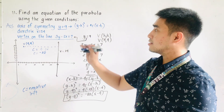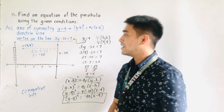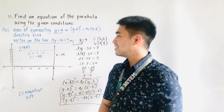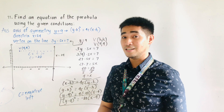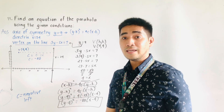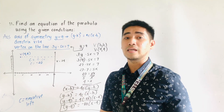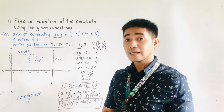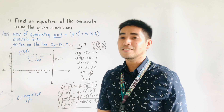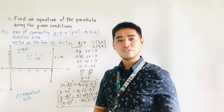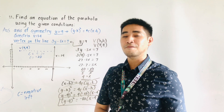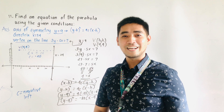Given the conditions — axis of symmetry y equals 9, directrix x equals 24, and vertex on the line 3y minus 5x equals 7 — always remember: if the axis of symmetry is given as y, use (y minus k) squared; if given as x, use (x minus h) squared. That's all for today. I hope you learned something from my video tutorial. This is Engineer Jad Edward Hernandez saying mathematics is always fun. Goodbye and God bless.